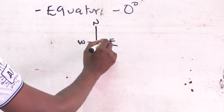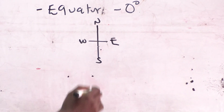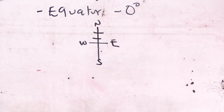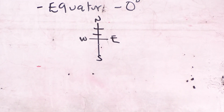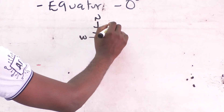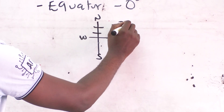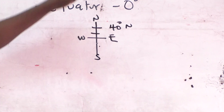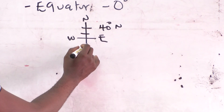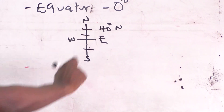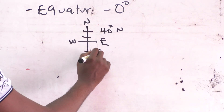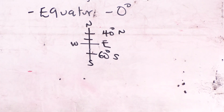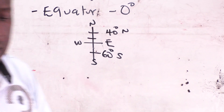We have said this is the equator. As you go up, you will find latitudes. How we name them — let's say this one is 40 degrees north. Why? Because we are going towards the north. And if we have another one going towards the south, it could be 60 degrees south. That is how we are going to label that latitude.